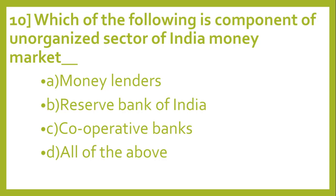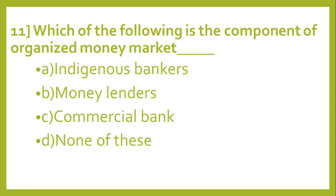Question number 10: Which of the following is a component of the unorganized sector of India's money market? Options: A: Money lenders. B: Reserve Bank of India. C: Cooperative banks. D: All of the above. And the correct answer is A, Money lenders.